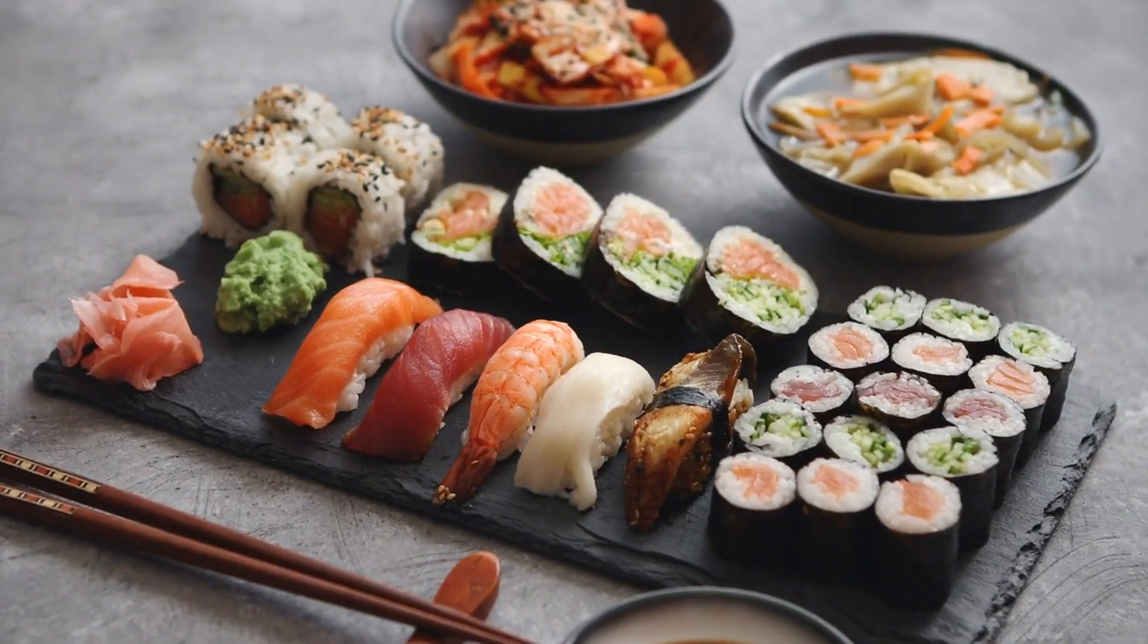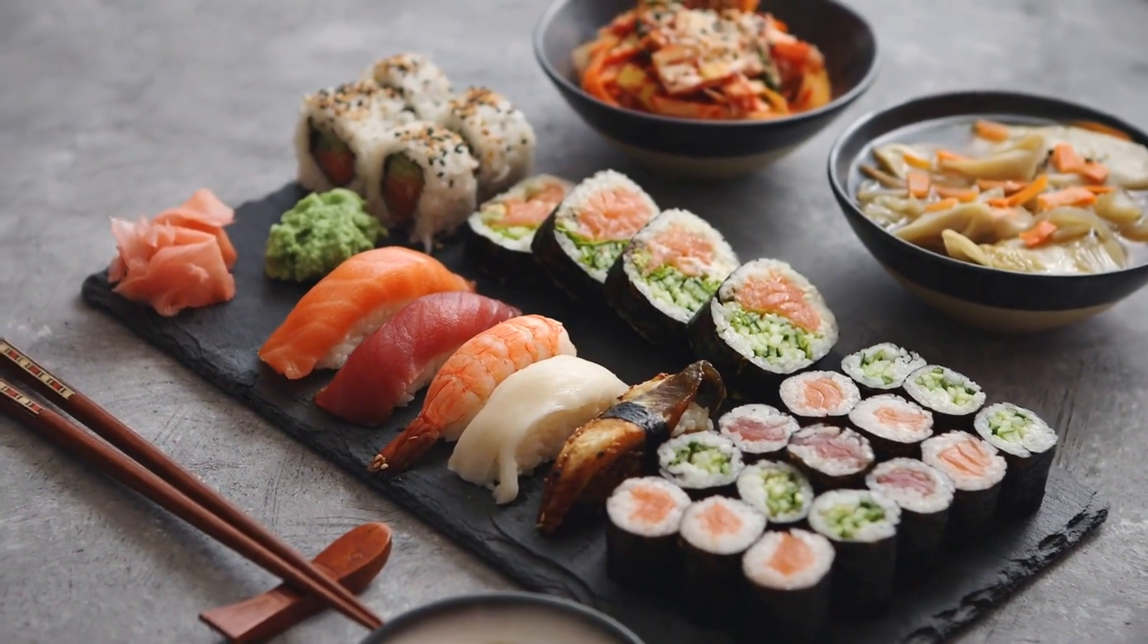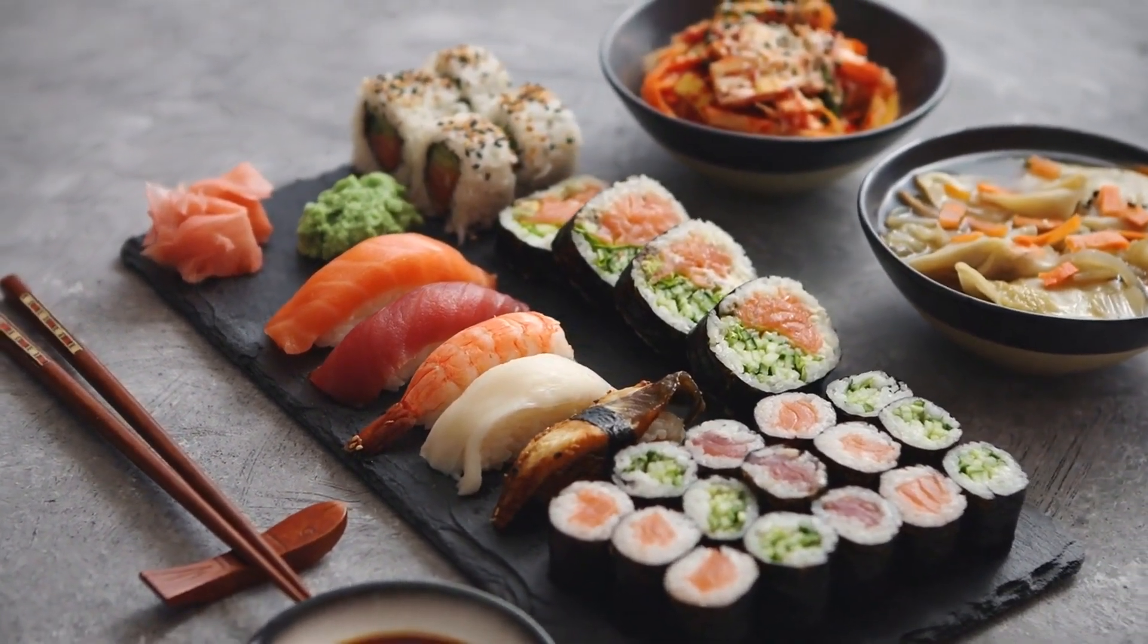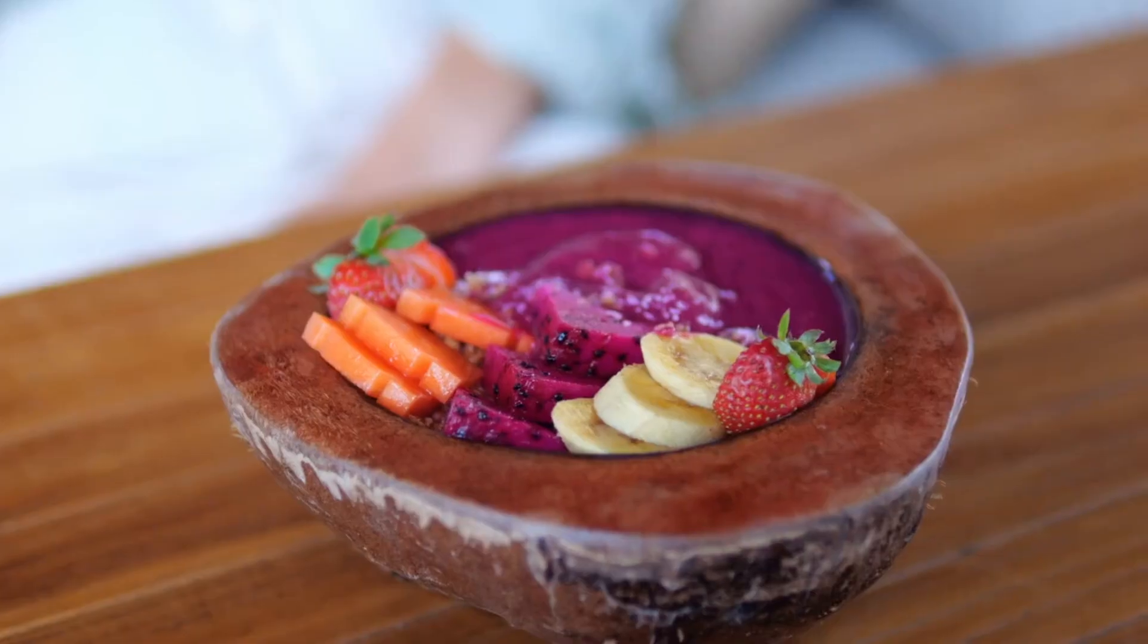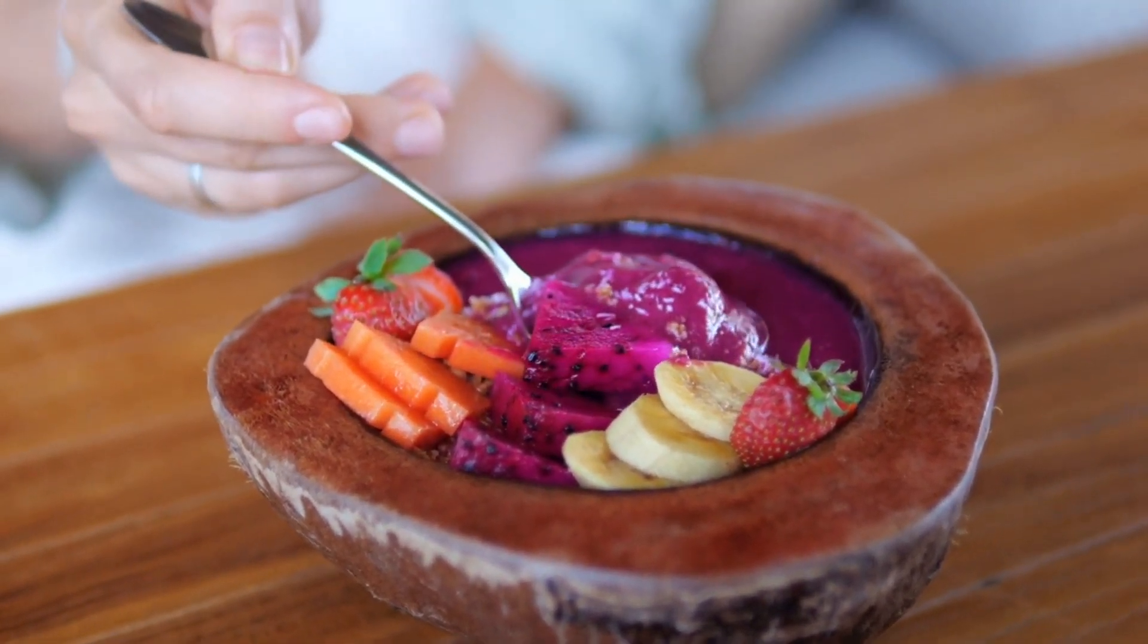Probiotics and fermented foods. Introduce probiotics and fermented foods like yogurt, kefir, sauerkraut, and kimchi into your diet. These contain beneficial bacteria that can help diversify and strengthen your gut microbiota.